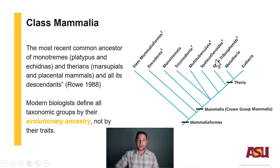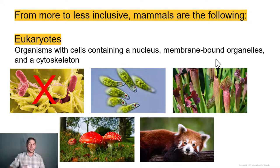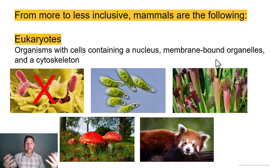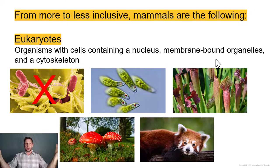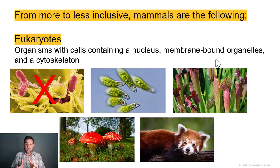Let's think about what exactly a mammal is and use Linnaean taxonomy to help us hone in. We're going to go from the most inclusive taxonomic category — domain — all the way down to the class level. The class Mammalia.